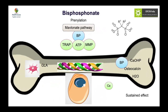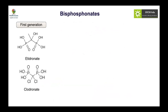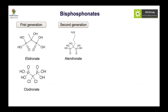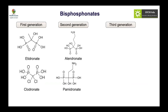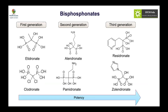Because bone resorption is blocked, calcium that would normally exit the bone is retained, creating a risk of hypocalcemia — as seen in the first case. Bisphosphonates have evolved over generations: first-generation agents were less potent; amino-terminal modifications produced more active second-generation agents like alendronate and pamidronate. Third-generation agents culminate in zoledronate, the most potent, with increasing structural complexity correlating with increasing potency.